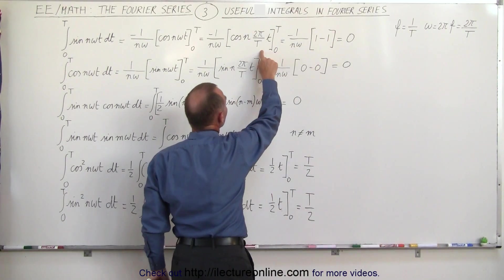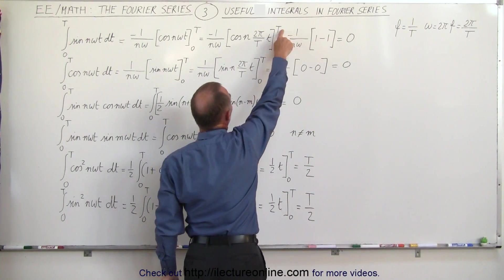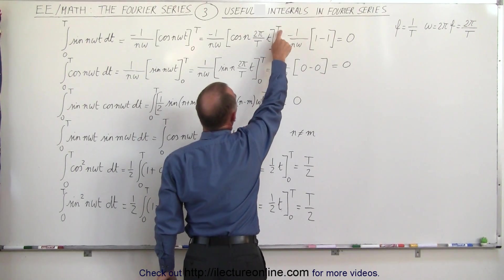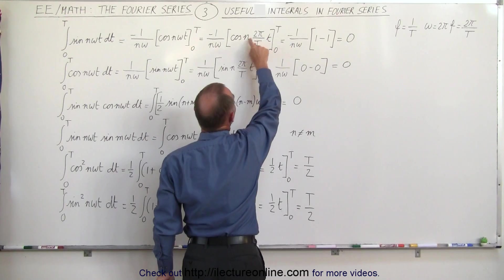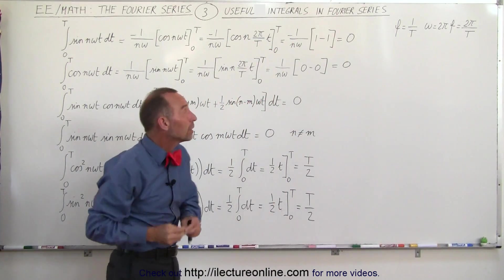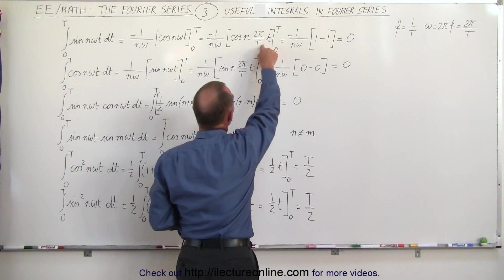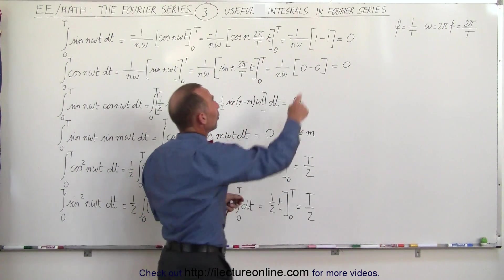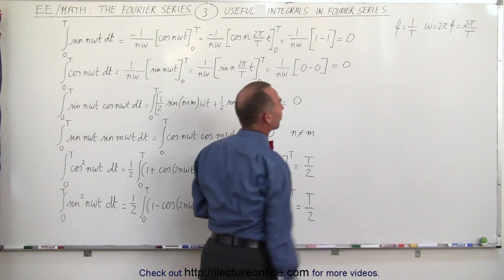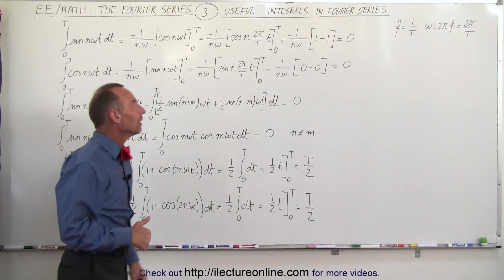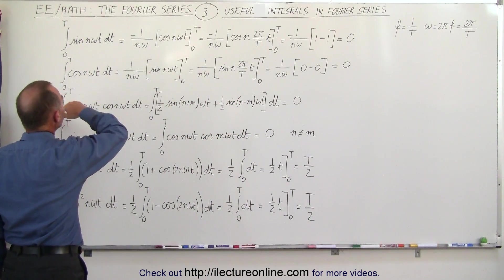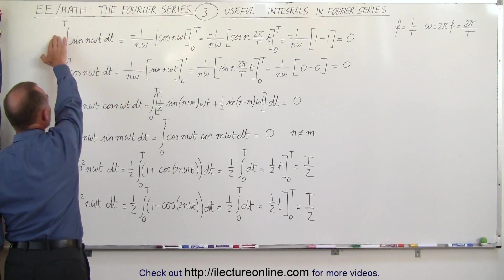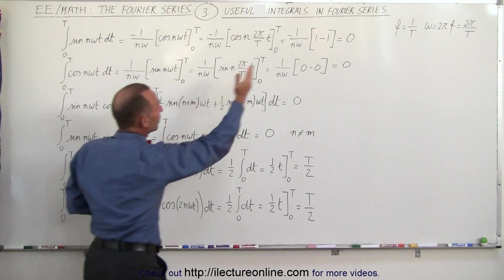Plugging that in and evaluating at the upper and lower limits: the cosine at the upper limit will be n times two pi, which always equals one. At the lower limit, the cosine of zero is also always equal to one, so we get one minus one, which is always zero. So now that we know that, we never have to integrate that again — whenever we see the sine of n omega t from zero to T, that's simply equal to zero.